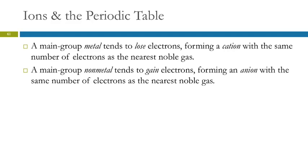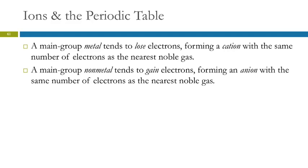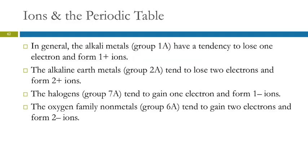So we're going to learn how to predict the charges of ions based on position. So main group metals tend to lose electrons. And they're going to form a cation that has the same number of electrons as the nearest noble gas. A main group nonmetal tends to gain electrons, making a negative ion, an anion that has the same number of electrons as the nearest noble gas. So in general, the alkali metals, those guys in group 1A, tend to lose one electron. So then they're going to form plus one ions, or one plus ions. Alkaline earth in group 2A tend to lose two electrons. So group 1A forms a one plus. Group 2A forms a two plus.